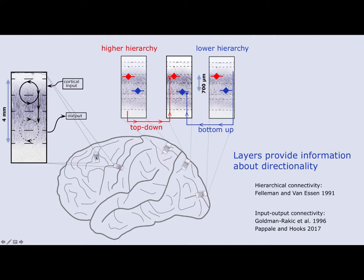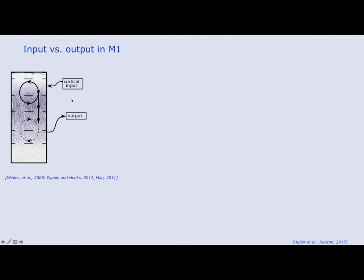For example, in the primary motor cortex, when you do any movement task, the corticocortical input from the sensory cortex or from motor planning areas like premotor cortex comes into the upper layers, it is integrated, and then the output — the cortical spinal output that eventually triggers the muscles — originates from the deeper layers. We can try to see this with high-resolution fMRI by manipulating the different input and output characteristics.